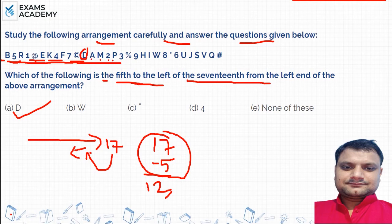You count direct 17th from the left, and then 5th from the left. So you have to go 5th from the left, so direct left from the 12th. So that is 'd', that is your answer.